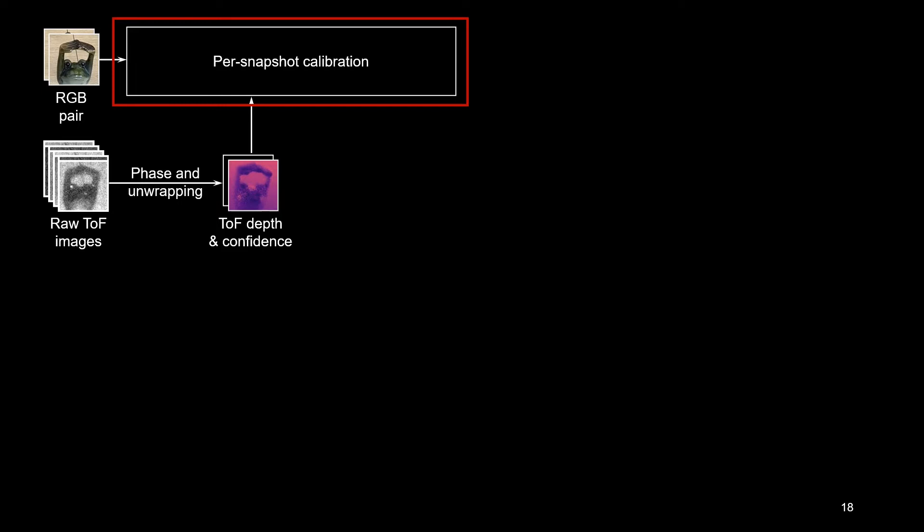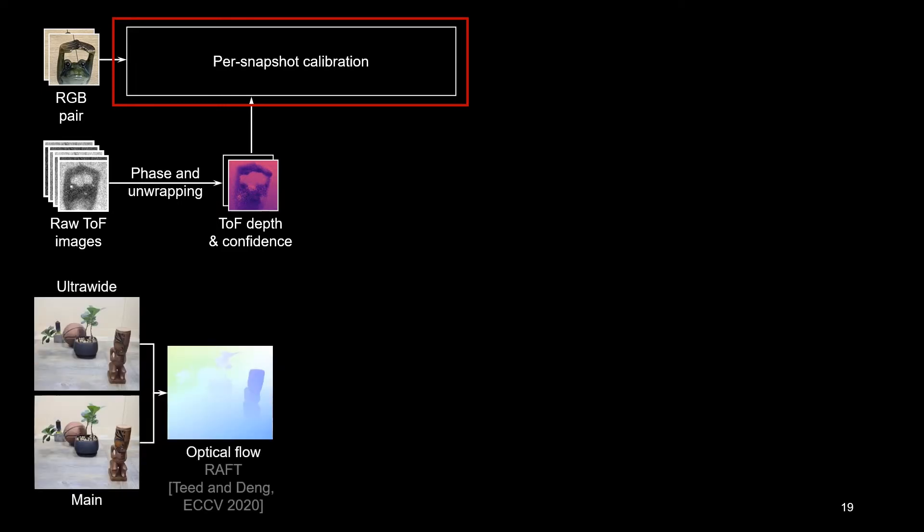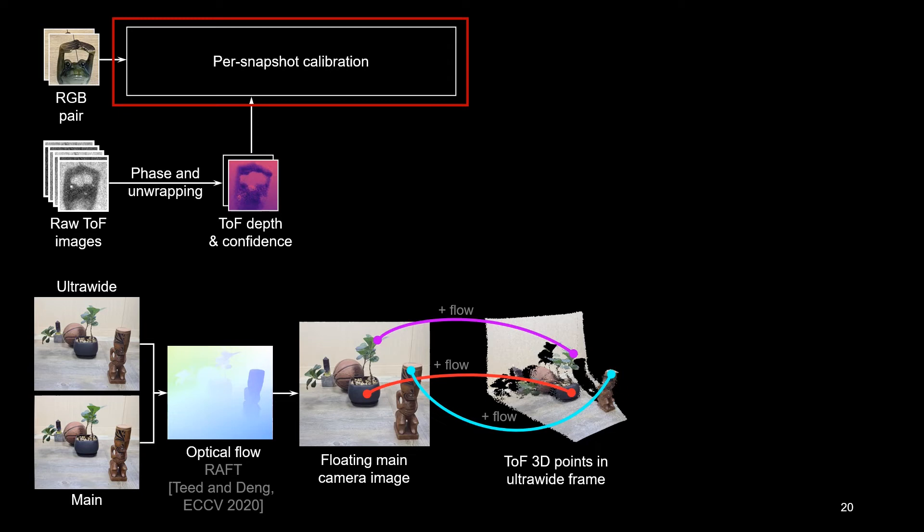For this, we need correspondences between 3D points in the world and 2D points in its plane. We estimate the dense optical flow between the main and ultrawide RGB cameras using RAFT. Next, we take the 3D ToF points, project them into the ultrawide camera's frame, then follow the optical flow from the ultrawide image to find 2D points in the main camera image. This provides dense 3D to 2D matches.